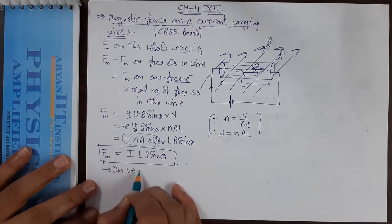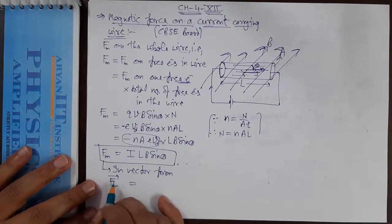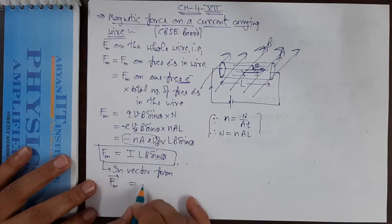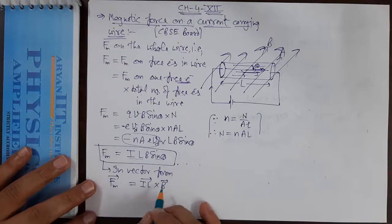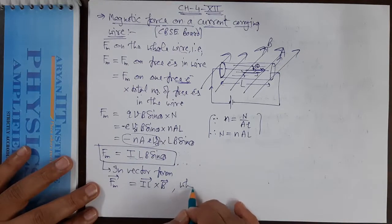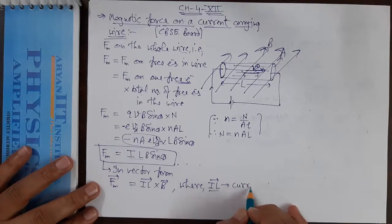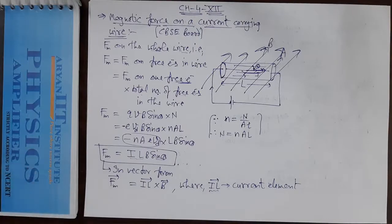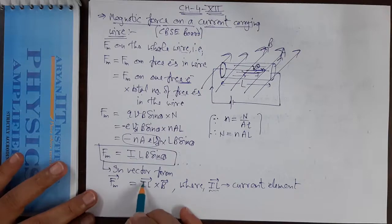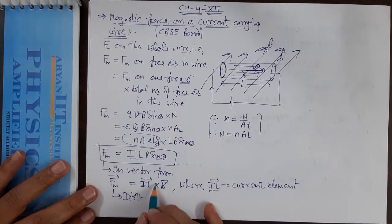To find the direction of the magnetic force, we write it in vector form. Where sinθ appears, we use the cross product. So the vector form is: F = I·L-vector cross B-vector, where I·L is a single term called the current element, with direction the same as that of current. The direction of the magnetic force is found using the right hand thumb rule.